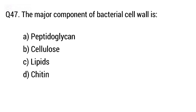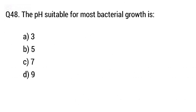Question 47: The major component of bacterial cell wall is. The right answer is Option A, peptidoglycan.